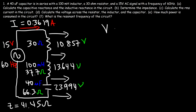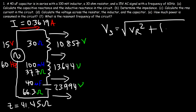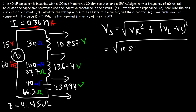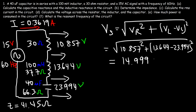To check your answer, use this formula: VS equals the square root of VR squared plus (VL minus VC) squared. So VR is 10.857, VL is 13.644, and VC is 23.994. This gives you 14.9999 volts, which matches the source voltage of 15 volts — that's how you know you have the right voltages.